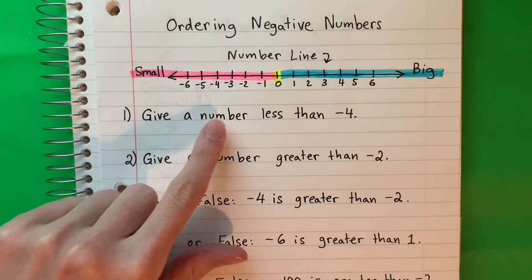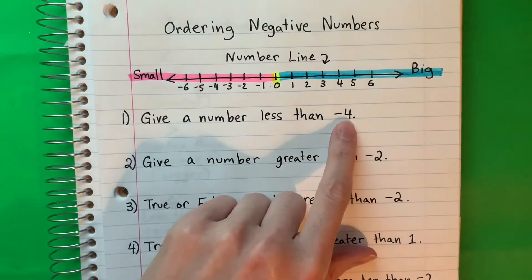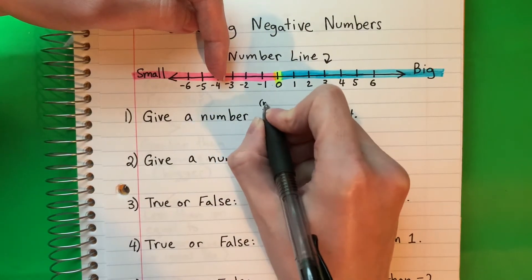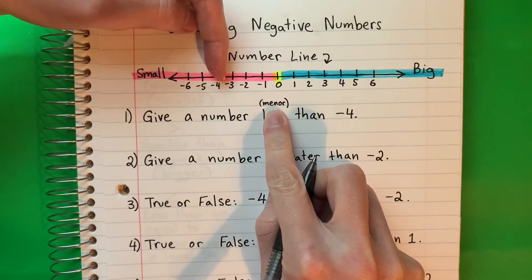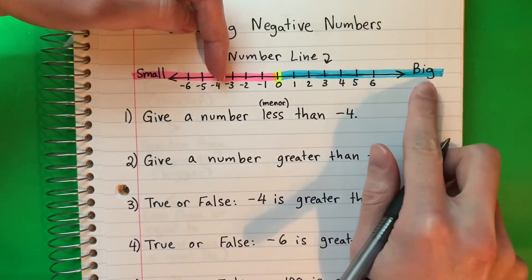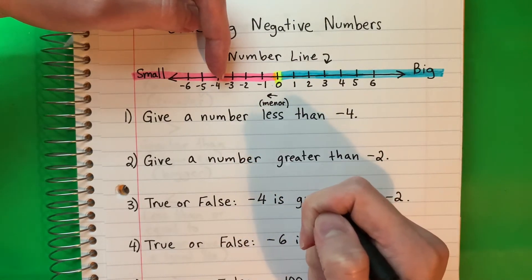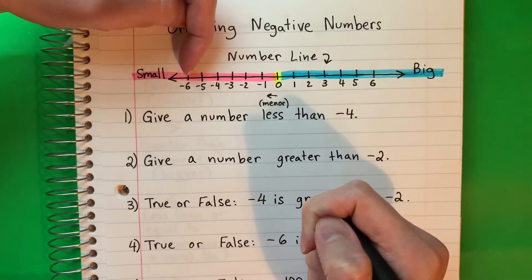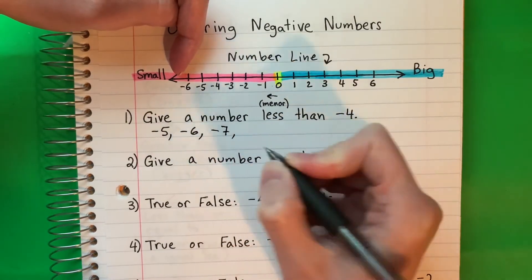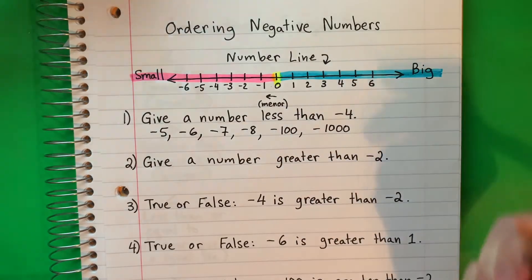Give a number less than negative 4. Da un número menor que negativo 4. So where is negative 4? It's right over here. I need less — less is smaller, menor. Small is to the left. So I need something to the left of negative 4 — necesito algo que está a la izquierda de negativo 4. What numbers are less than negative 4? Negative 5, negative 6, negative 7, negative 8, negative 100, negative 1,000 — so these numbers continue.